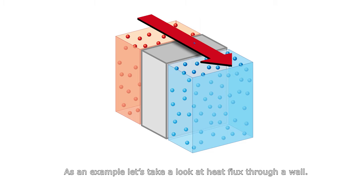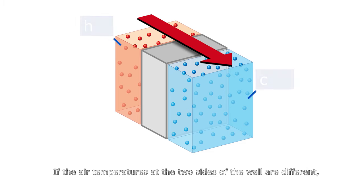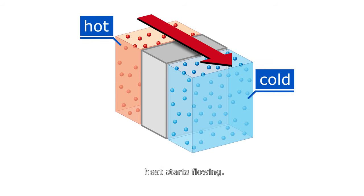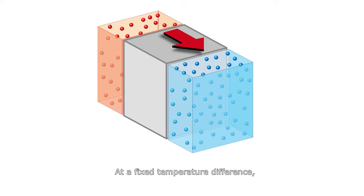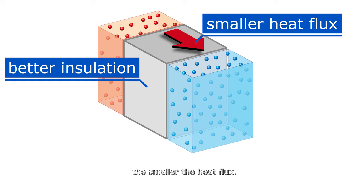As an example, let's take a look at heat flux through a wall. If the air temperatures at the two sides of the wall are different, heat starts flowing. At a fixed temperature difference, the better the wall insulates, the smaller the heat flux.